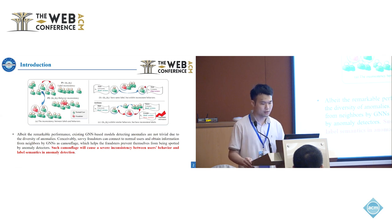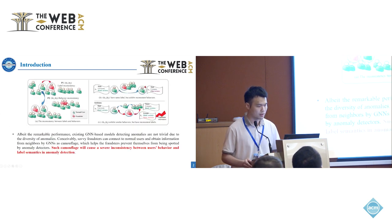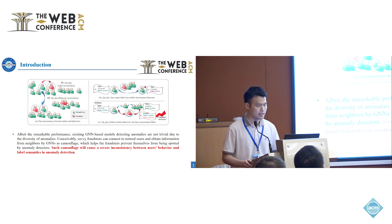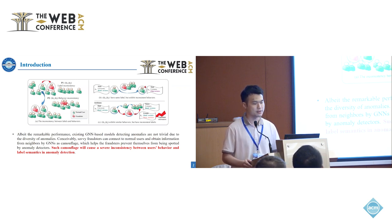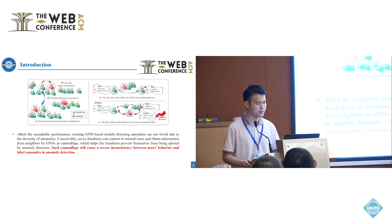In Figure 1c, crafted fraudsters — for example, user 2 — seek to connect with neighbor users such as user 1, and learn information from GNNs, for example hotel reviews. User 1 and user 2 exhibit similar behaviors, but their neighbors are inconsistent. Such conflicts cause a severe inconsistency between users' behavior and label semantics in anomaly detection.